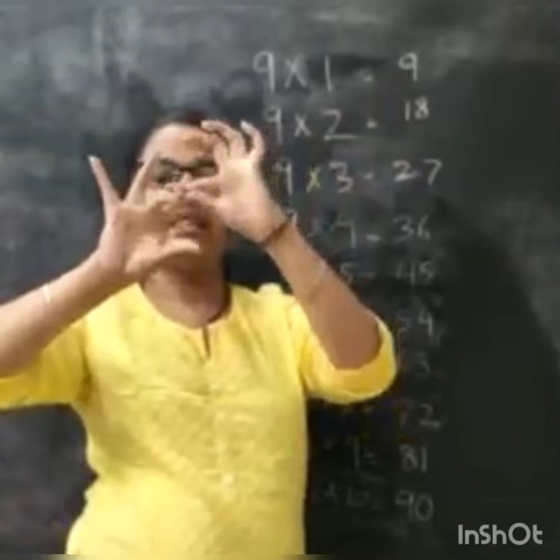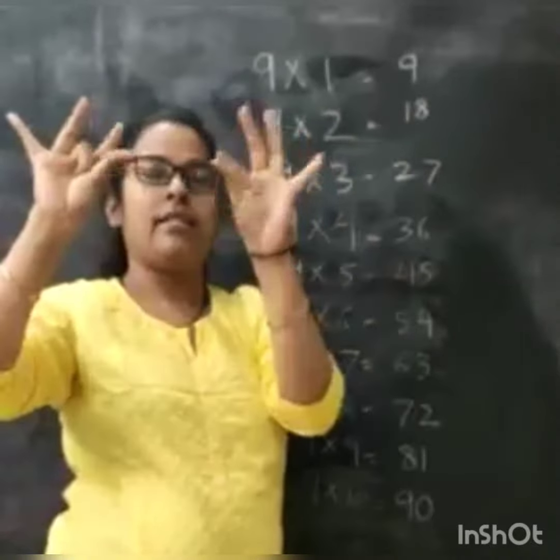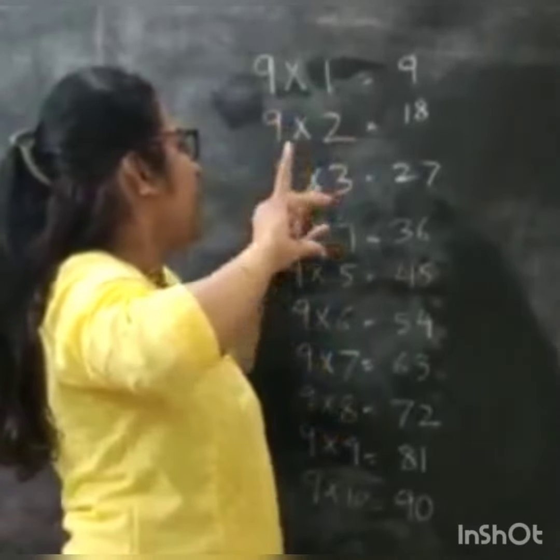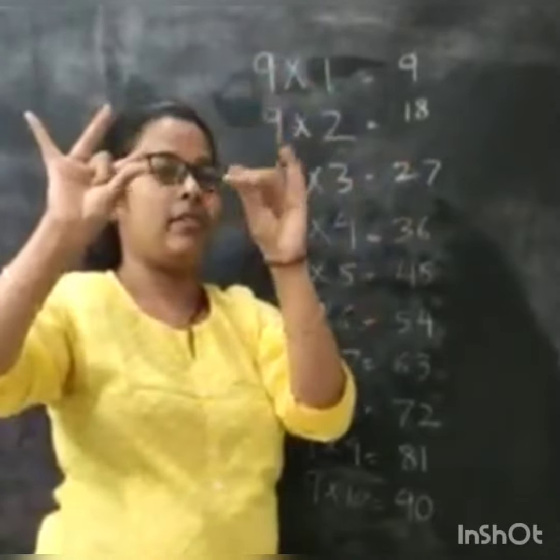Now I will close my third finger. So 2 over here and 7 over here. So 9 times 3 is 27.